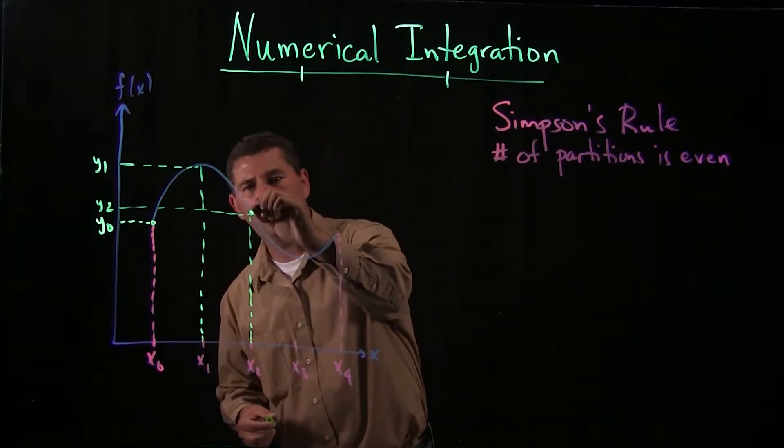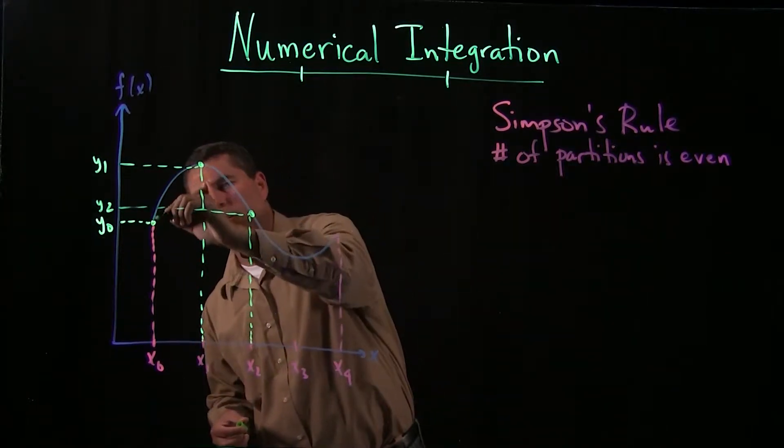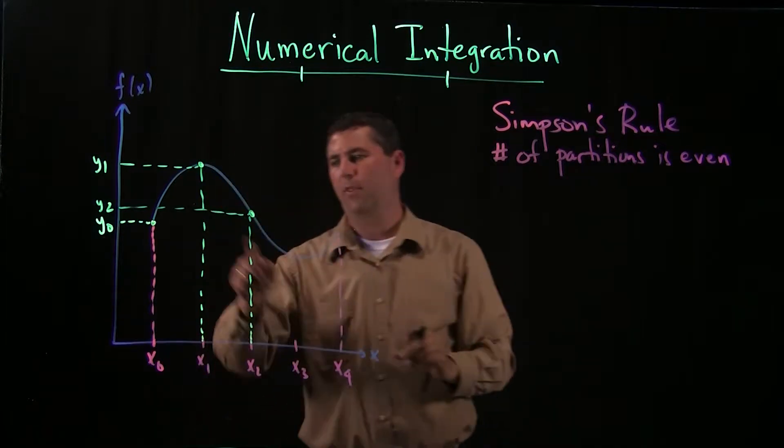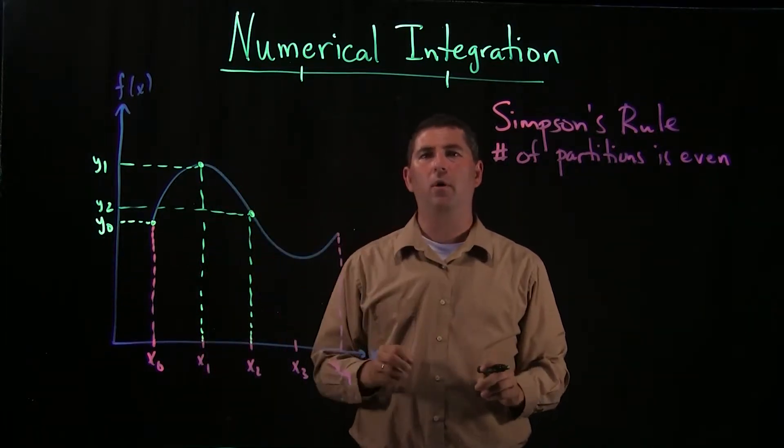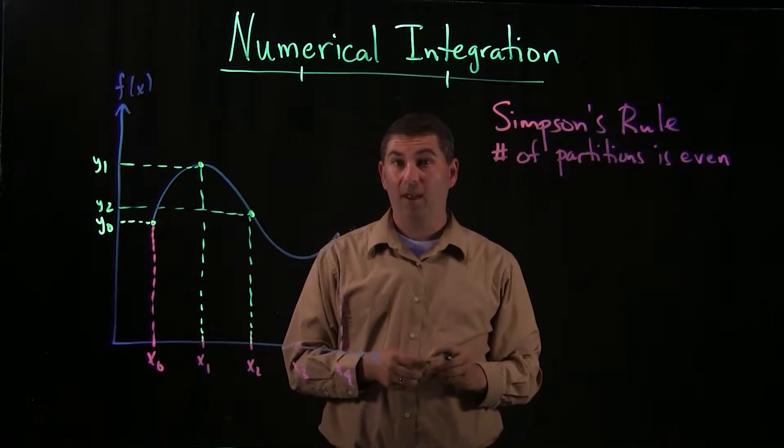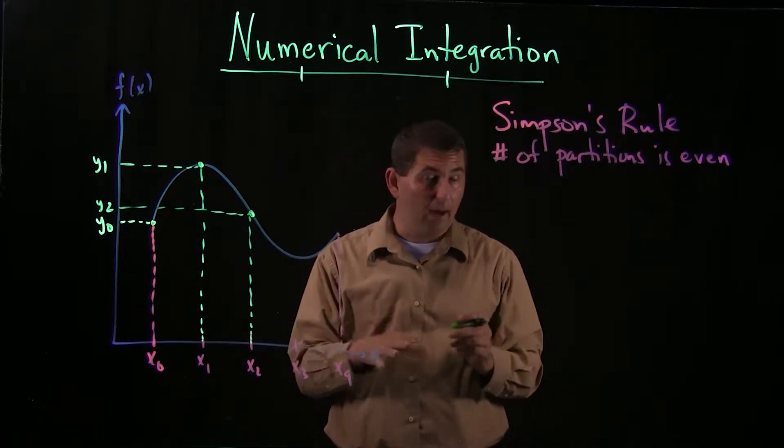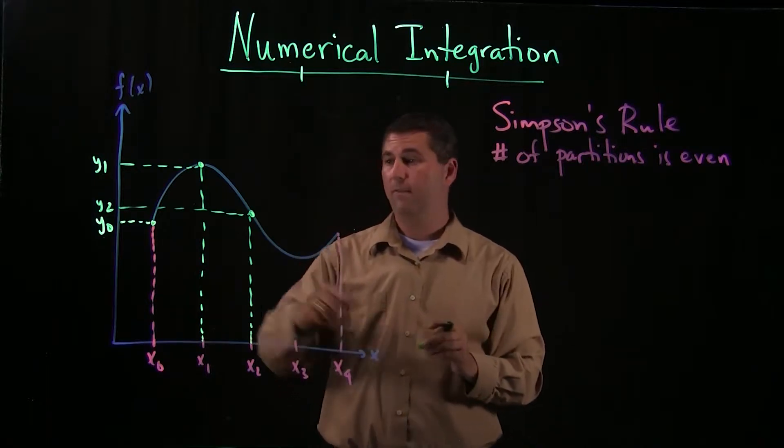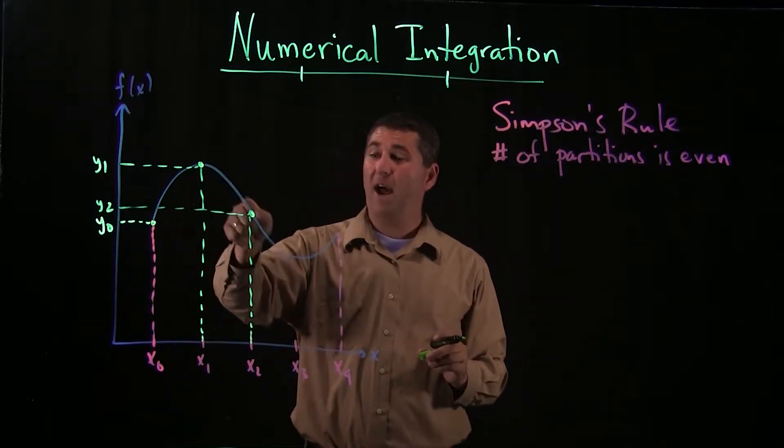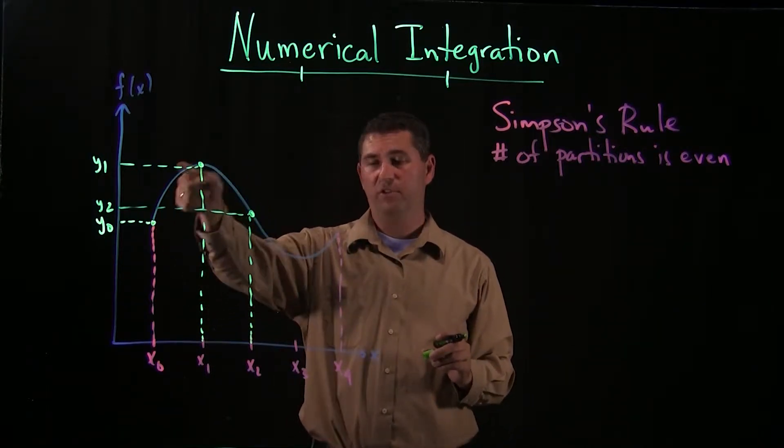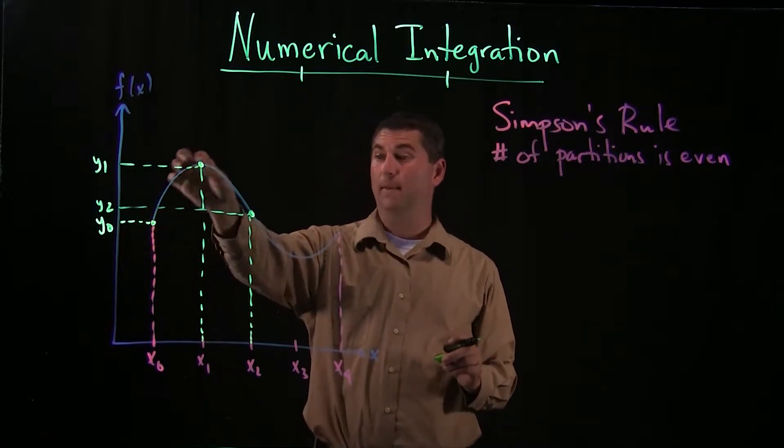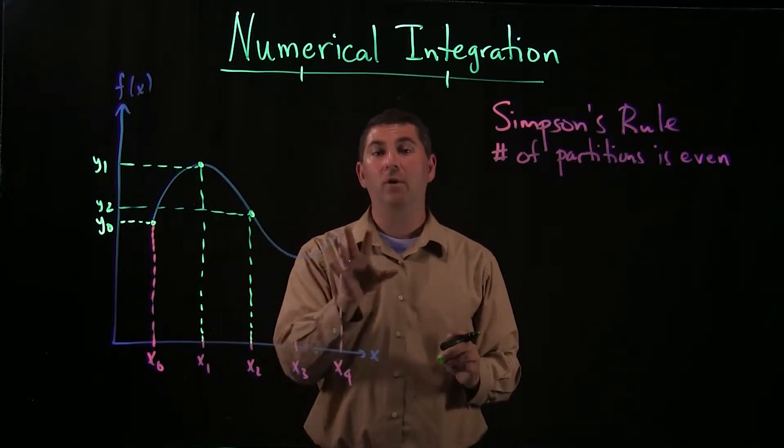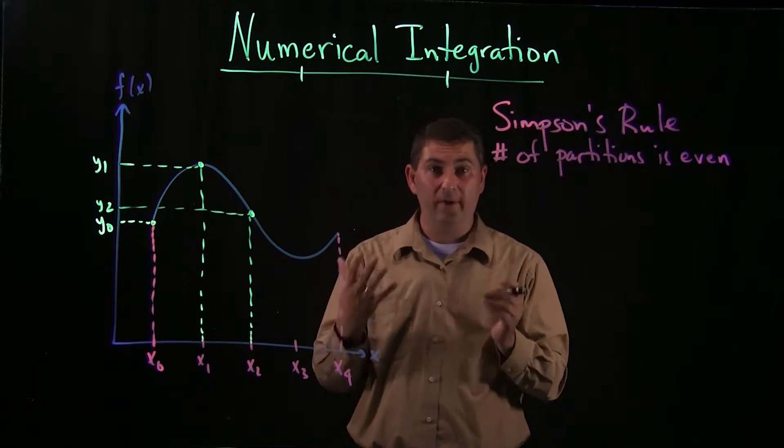So I get these three points, and it's an old theorem from geometry that three non-colinear points are going to define a parabola. So there is a way to do this, and I'm not going to go through the derivation of it, but there is a way to figure out what if I draw a parabola through those three points. It should reasonably approximate that curve, and I want to know what that area is. And it's actually a very easy formula.